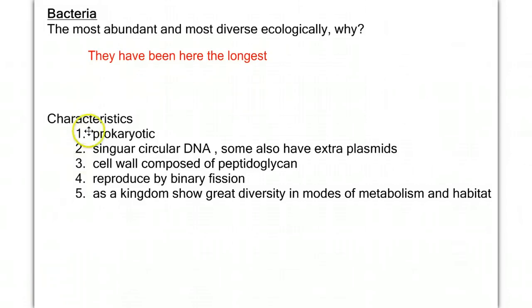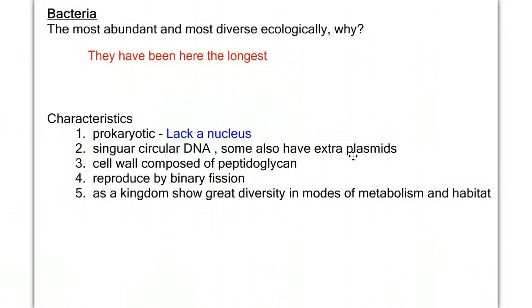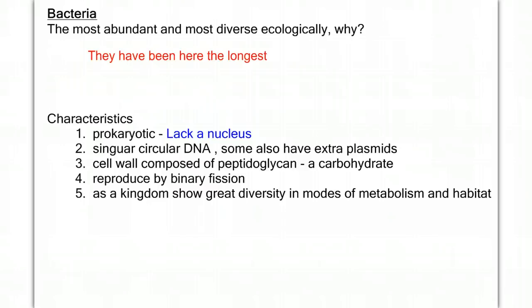General characteristics of bacteria: they are prokaryotic, meaning they lack a nucleus. They have a singular piece of DNA that is circular, rather than the multiple linear pieces found in eukaryotic cells. Some have extra smaller pieces of DNA called plasmids that contain non-essential genes. Many have cell walls composed of a carbohydrate called peptidoglycan, and they reproduce by a process called binary fission. As a kingdom, they show great diversity in modes of metabolism and habitat.